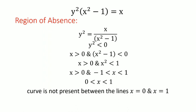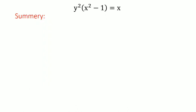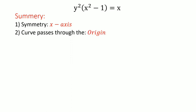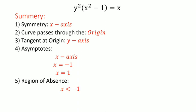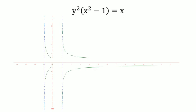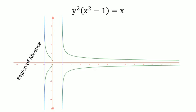Summary: The curve has symmetry about the x-axis, passes through the origin, and the tangent at the origin is the y-axis. The asymptotes are the x-axis, x = -1, and x = 1. The regions of absence are x < -1 and x between 0 and 1. From this summary, we will now draw the curve.